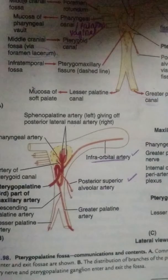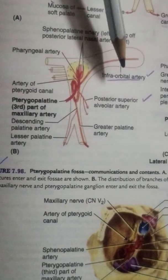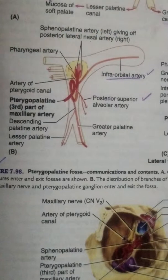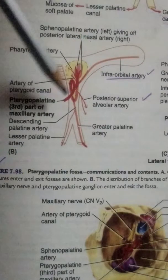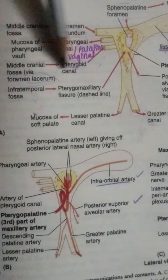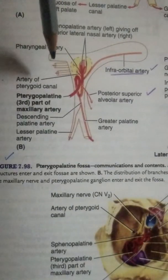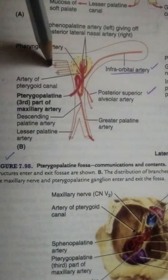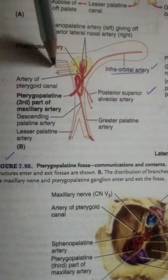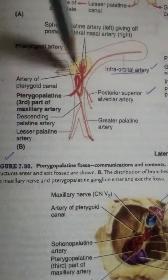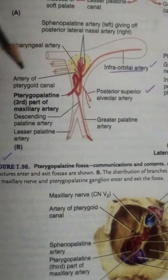Now we can do the branches. As mentioned earlier, the infraorbital and posterior superior alveolar are given before entering the pterygopalatine fossa. Inside the fossa, since there is the pharyngeal canal and pterygoid canal, we have the pharyngeal artery and the artery to the pterygoid canal. The pharyngeal artery supplies the mucosa of the pharynx, and the artery to the pterygoid canal supplies the auditory tube, upper pharynx, and middle ear.